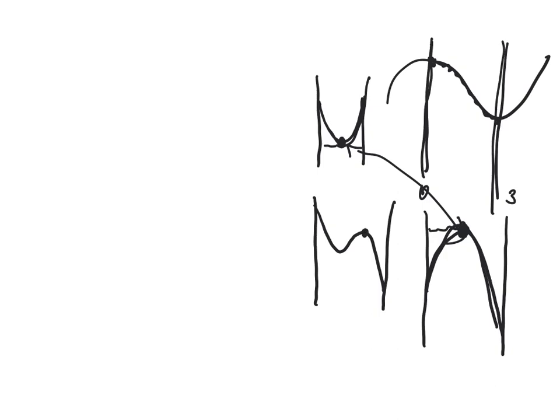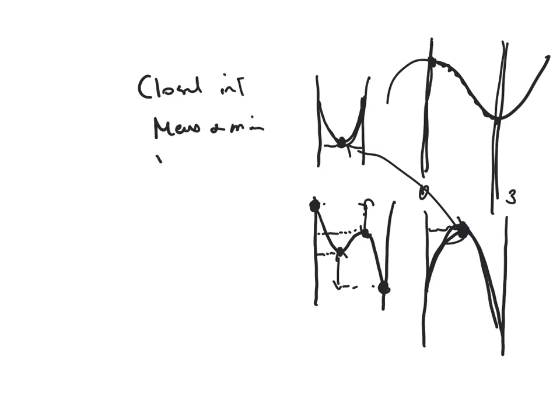In this one, the maximum value does occur at the maximum turning point, and the minimum value definitely occurs at the minimum turning point. But for a function like this one, the maximum value does not occur at the maximum turning point — it actually occurs at the endpoint, because we can see that that's further up than the maximum turning point. The minimum value also does not occur at the minimum turning point, but actually occurs at the endpoint. So what we can say is true: in a closed interval, the max and min values occur either at the turning points or the endpoints.